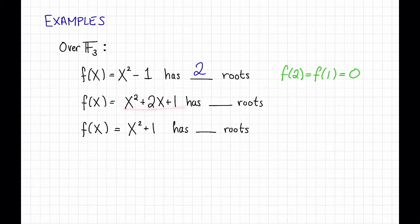Similarly, x^2 + 2x + 1 has 1 root over f_3. It's because f(2) = 9, which equals 0 mod 3. And once again, you can check that neither 0 nor 1 are roots of this polynomial.